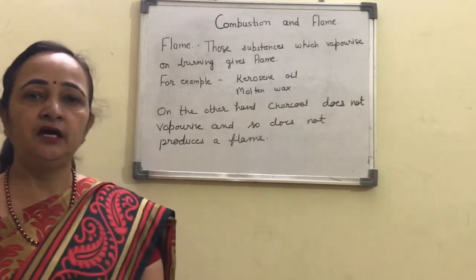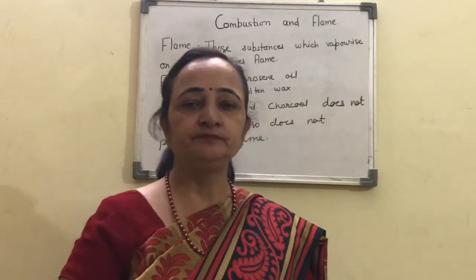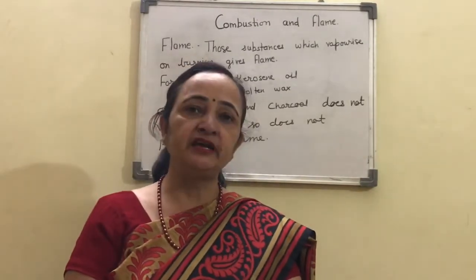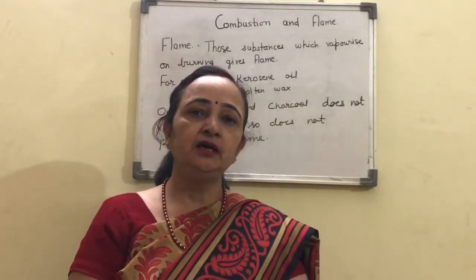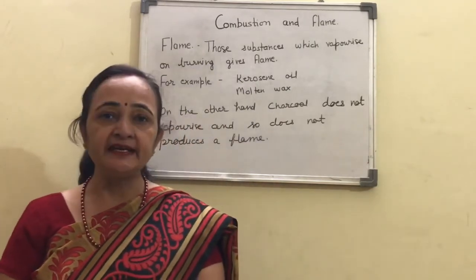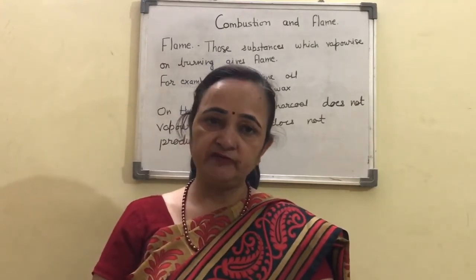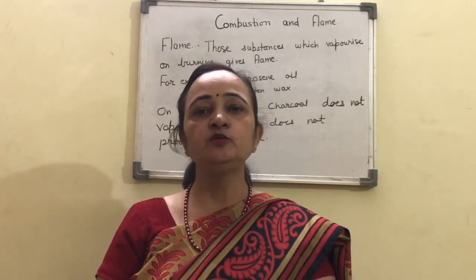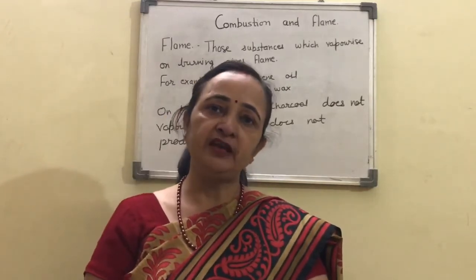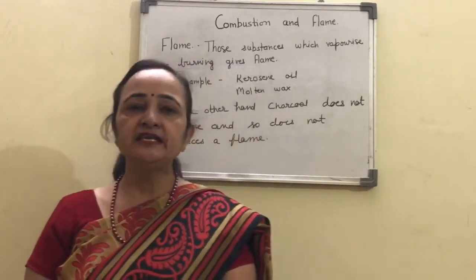So open your NCERT book and see page number 70. On page number 70 you will observe that a table is given. In that table you can see some names of substances are given — like candle, magnesium, camphor, kerosene flame, and charcoal. You have to complete the table. If the substances form flames, then you put a tick in front of it; otherwise, just cross it.